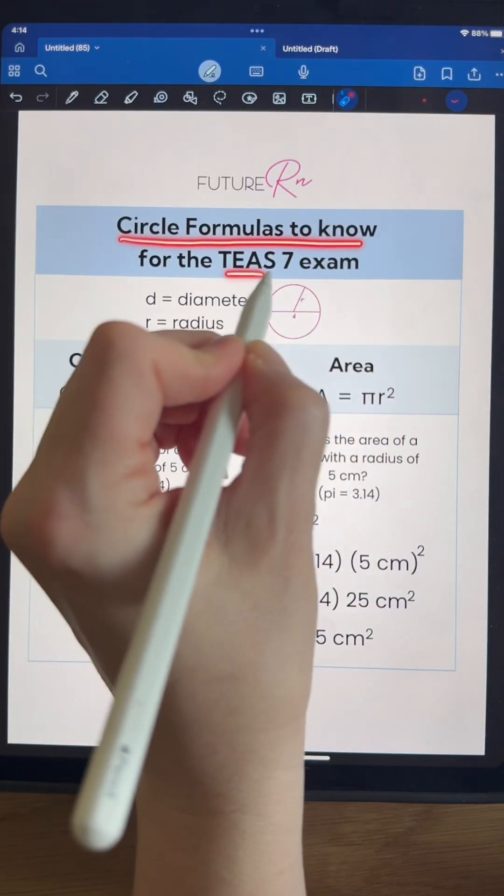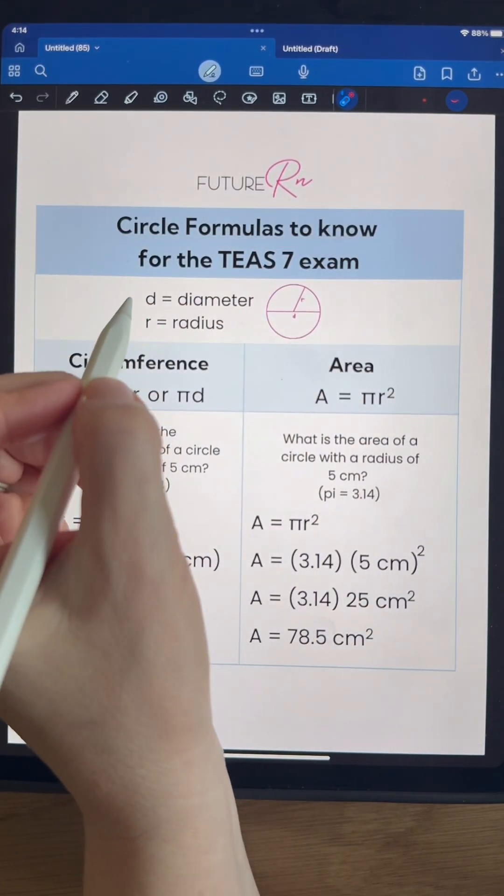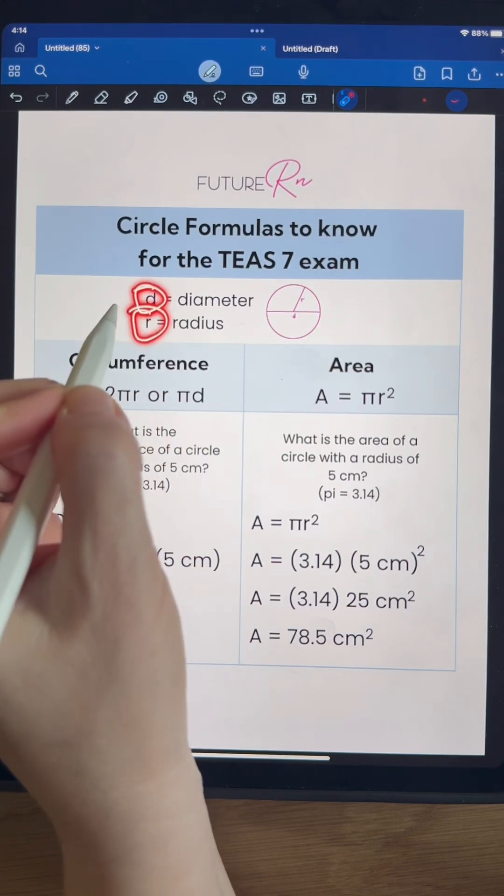Let's review the circle formulas you need to know for your TEAS 7 exam. But before we can do formulas, we need to remember what diameter is and what radius is.